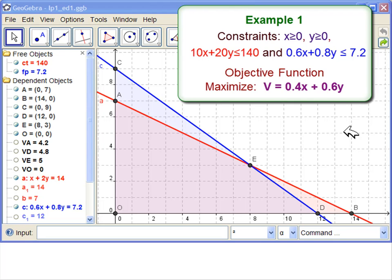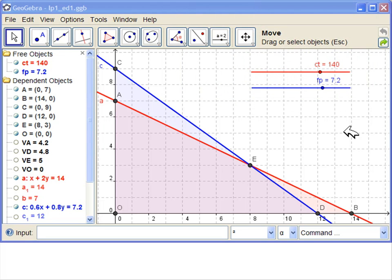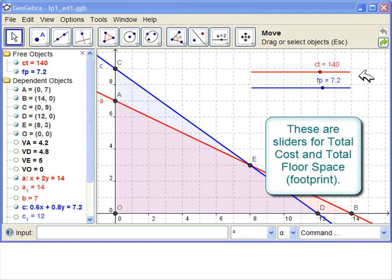Here is our GeoGebra solution to example one, except that now we've added sliders for the total cost allowed and for the total floor space available.